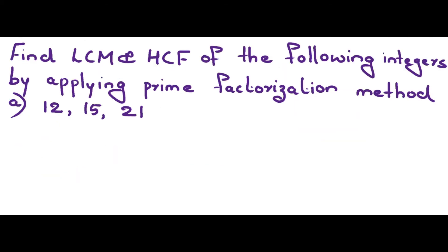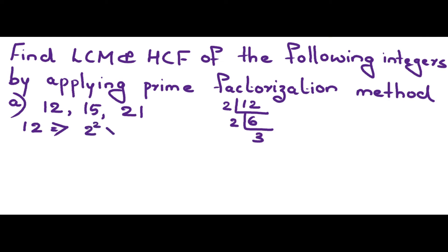Next question: find the LCM and HCF of the integers 12, 15, and 21 by applying the prime factorization method. First, express each number: 12 = 2² × 3, then 15 = 3 × 5, and 21 = 7 × 3.